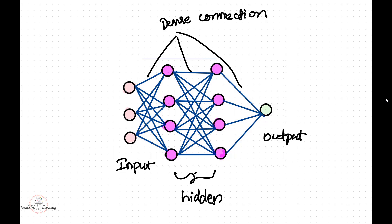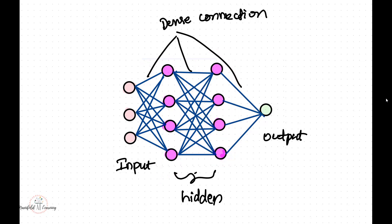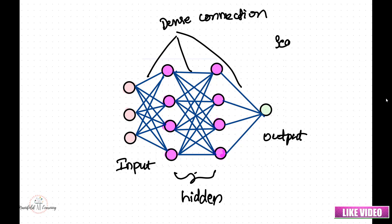You can also observe one important characteristic. The input layer is stacked next to hidden layer one, and hidden layer one is stacked next to hidden layer two, and hidden layer two is stacked next to the output layer. As you can clearly see, I'm stacking one layer next to another. This type of stacking of layers is called sequential layers.